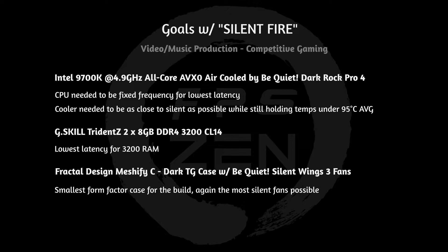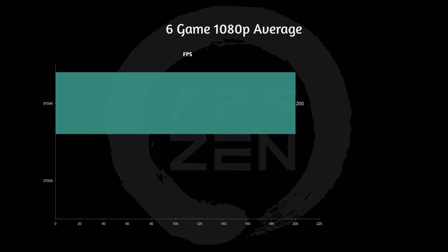I selected the be quiet Dark Rock Pro 4 because I needed a cooler that was as close to silent as possible, and it definitely is — it's one of the quietest coolers with a 250-watt cooling capacity, keeping my processor under an average of 95 degrees Celsius. I also chose the G.Skill Trident Z 16GB dual-channel kit at 3200 CL14, as that's the lowest latency possible for 3200 MHz RAM.